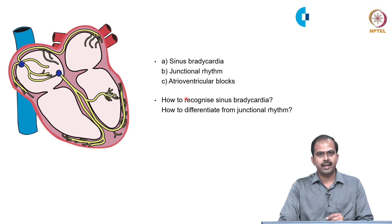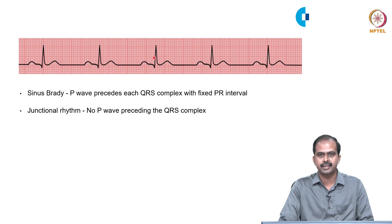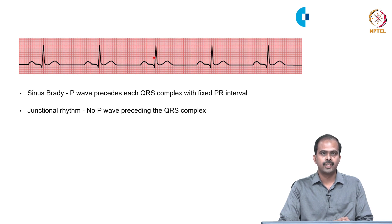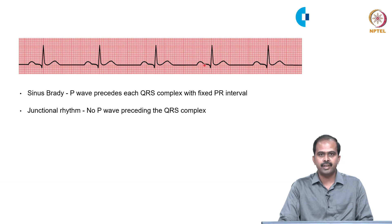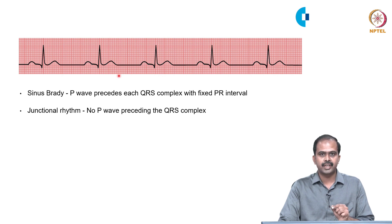In this ECG, let us first calculate the rate by tracing the R waves. Between two R waves there are 6 big boxes, so 300 divided by 6 equals 50. The rate is less than 60, so it is bradycardia. To confirm it is sinus, there is an upright P wave preceding each QRS complex with a fixed PR interval. This is an example of sinus bradycardia.